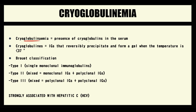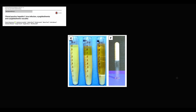Cryoglobulinemia is simply the presence of cryoglobulins in the serum. Cryoglobulins are immunoglobulins that reversibly precipitate and form a gel when the temperature is less than 37°C. The presence of cryoglobulins is determined by precipitation under 37°C, and the resulting cryoprecipitate indicates cryoglobulinemia.